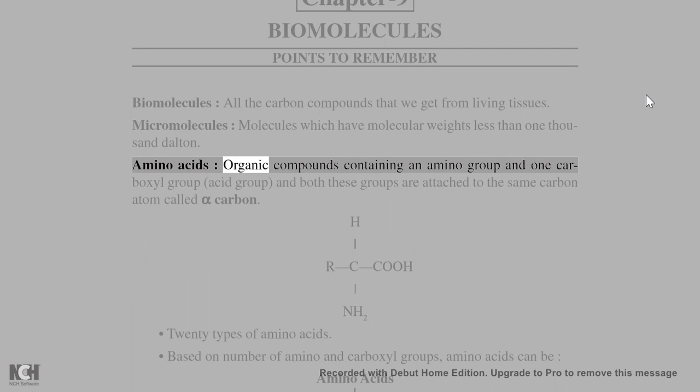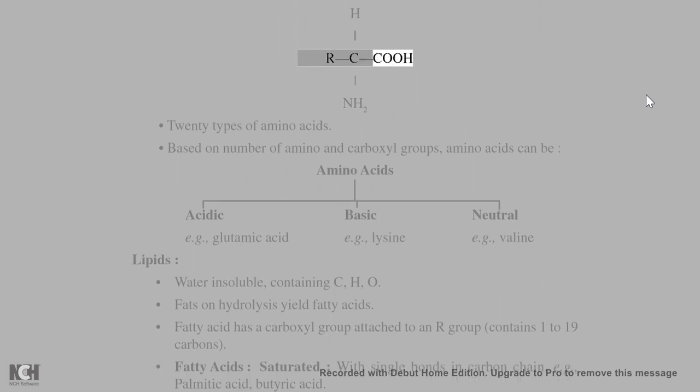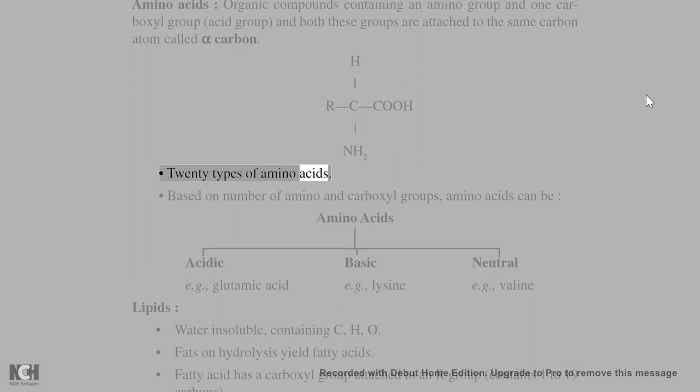Amino acids are organic compounds containing an amino group and one carboxyl group, and both these groups are attached to the same carbon atom called alpha carbon. Based on number of amino and carboxyl groups, amino acids can be acidic, basic, or neutral.